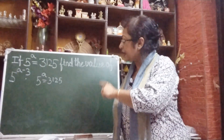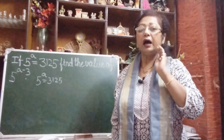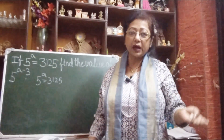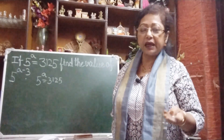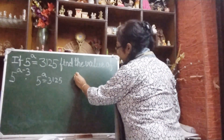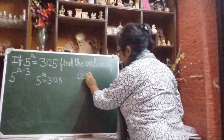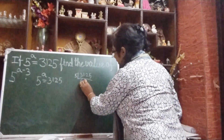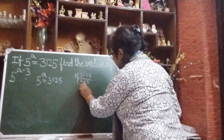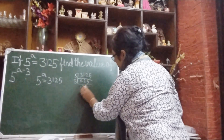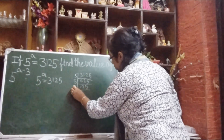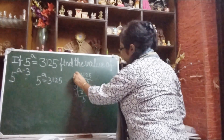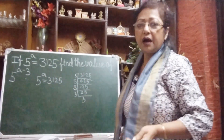So we have to convert 3125 into 5 to the power something — 5 to the power 5. You may ask: how? Very easy. You will just factorize 3125. The last digit is 5, so it is divisible by 5. Divide repeatedly by 5: 5 times 625, 5 times 125, 5 times 25, 5 times 5. How many 5s did we get? 1, 2, 3, 4, and 5 — so 3125 equals 5 to the power 5.